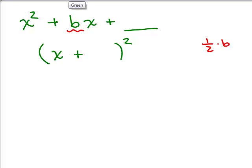Just like if it was 5, it would be 5 over 2. So this will be B over 2. And then squaring that, that's what's going to go up on the blank here, B squared over 4. And there you go.